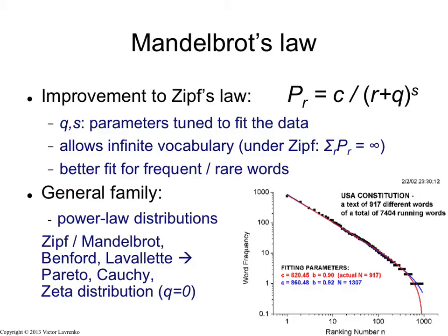That's where Mandelbrot's law comes in. Mandelbrot's law is a variation of Zipf's law — you can think of it as an improvement. It's basically a way to tweak Zipf's law to make it a better fit for rare words. The way it's usually formulated is you take the Zipf's law formulation, constant over the rank, add a constant Q to the rank R, and raise the whole quantity to the power of S. So you get R plus Q raised to the power of S, and that is the denominator instead of just the rank R.